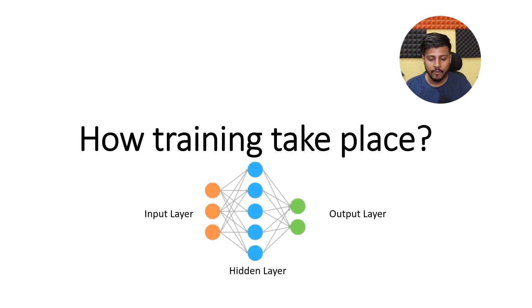It is initially unaware of what the input means or how to interpret them, but by repeatedly exposing the network to labeled examples and adjusting its internal connections, it gradually learns to recognize meaningful patterns and associations.